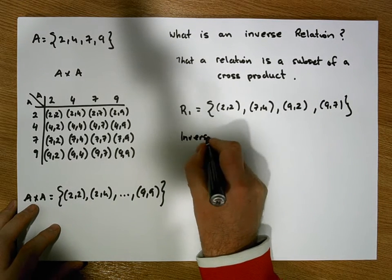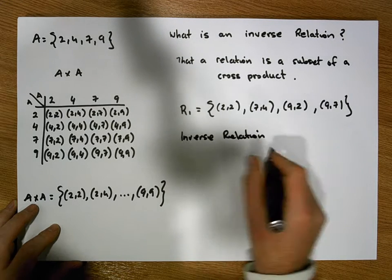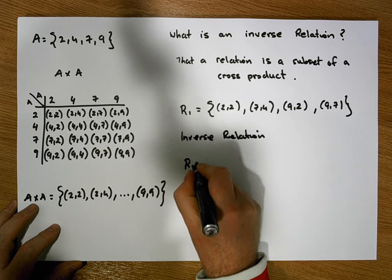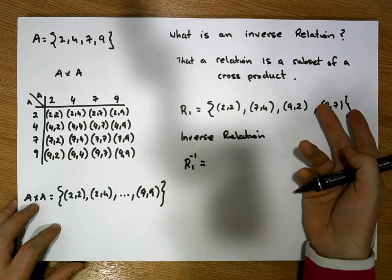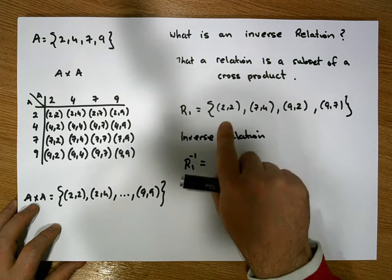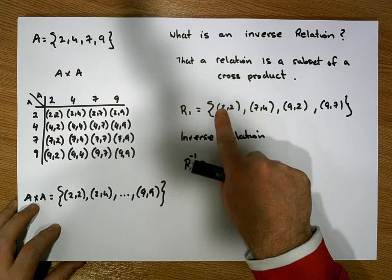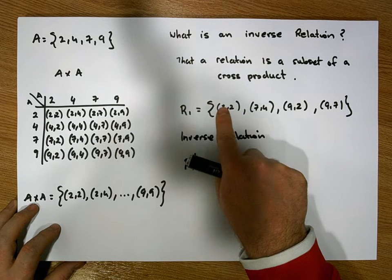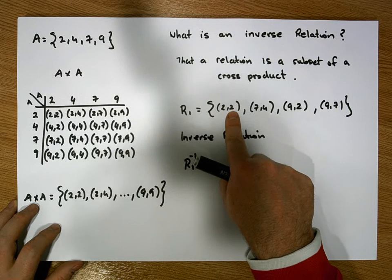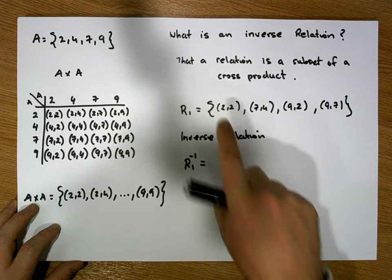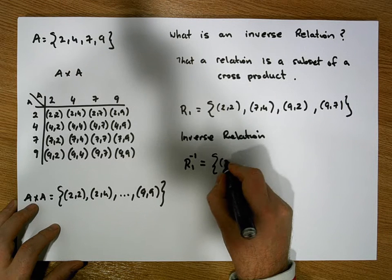The inverse relation — let's call that R1 inverse — is simply the inverse mapping, where we take the range values and map them into the domain values. So this ordered pair tells us that 2 is taken to 2, so the inverse would be that 2 is taken back to 2. So the relation R1 inverse would contain (2,2).